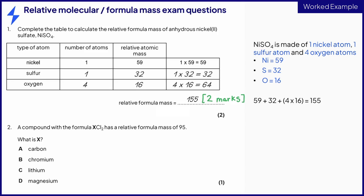If you did not get a final answer of 155, you can still gain one mark for either the sulfur row being correct or the oxygen row being correct.